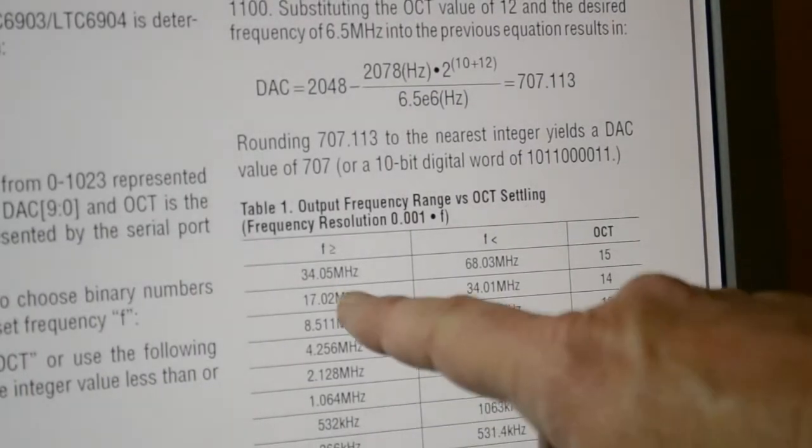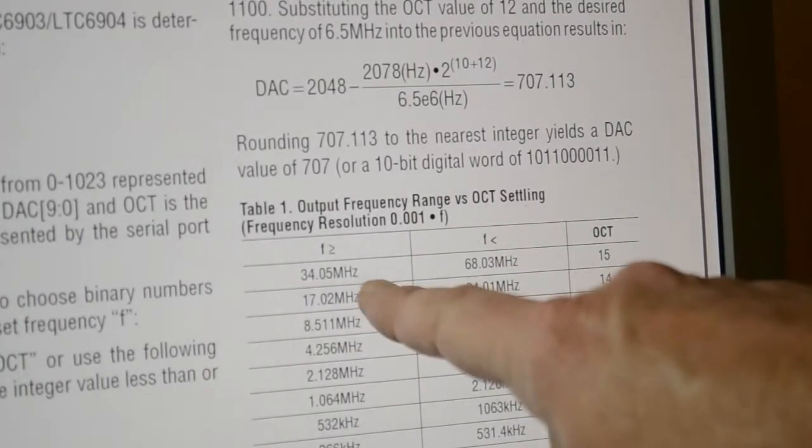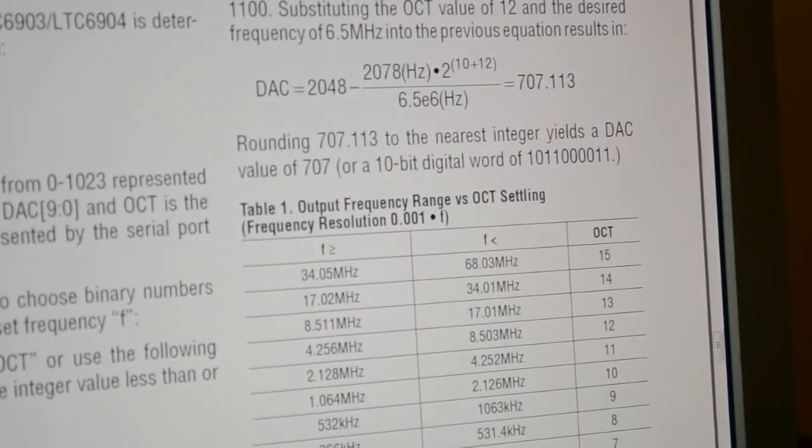So finally then, those four ones give us the 34 megs, now to get the 68, just fill in the last 10 bits.